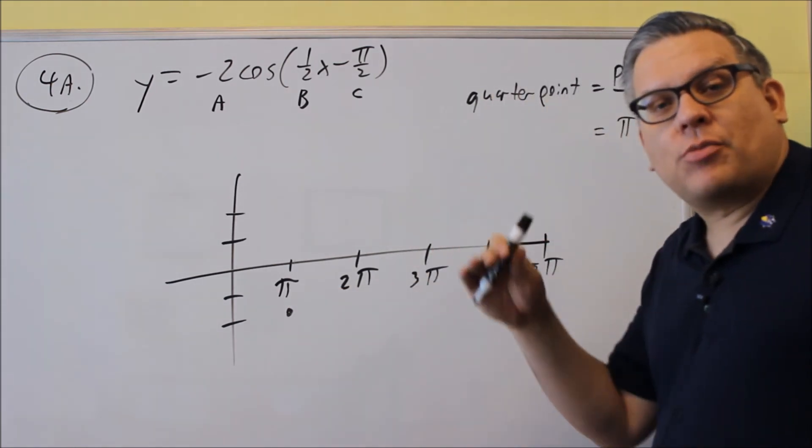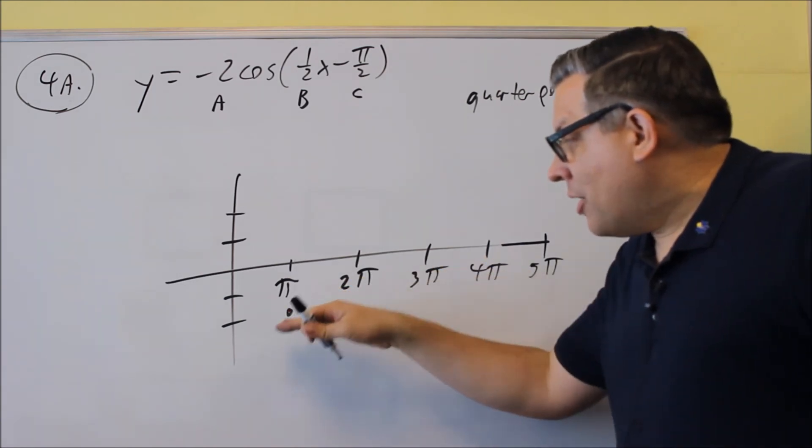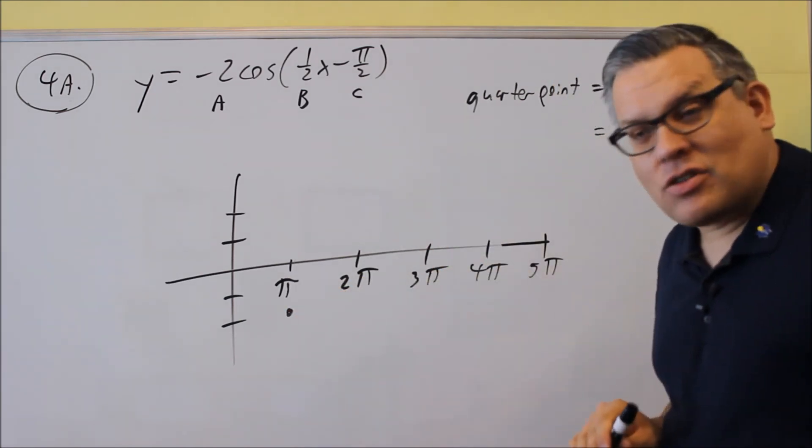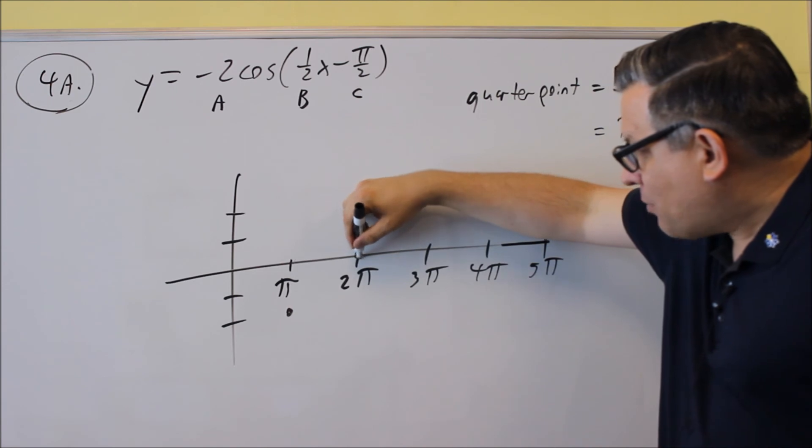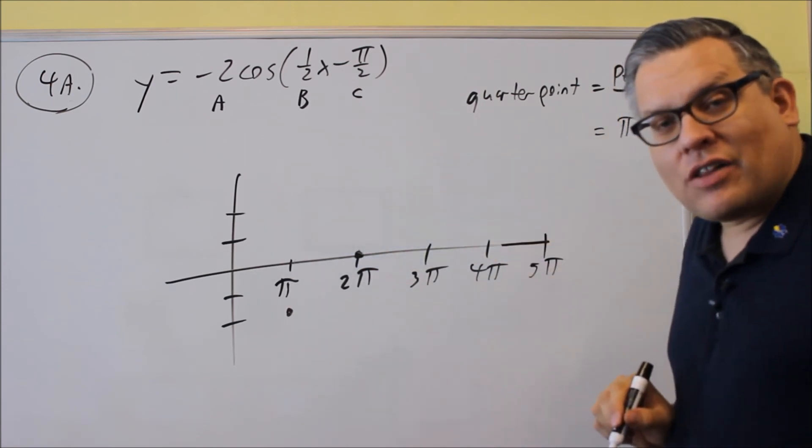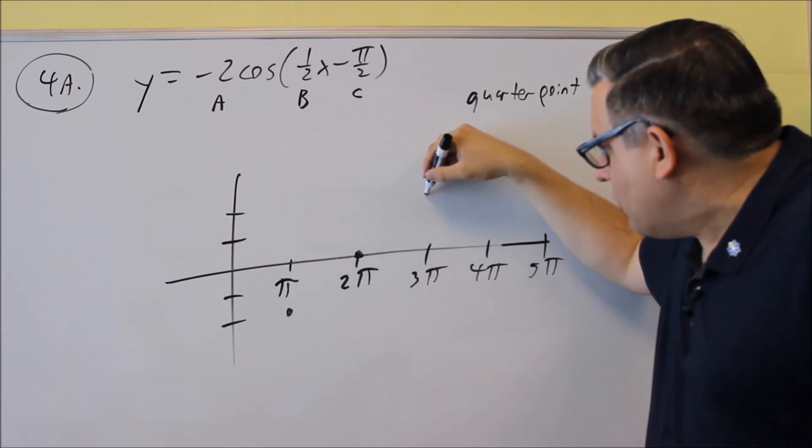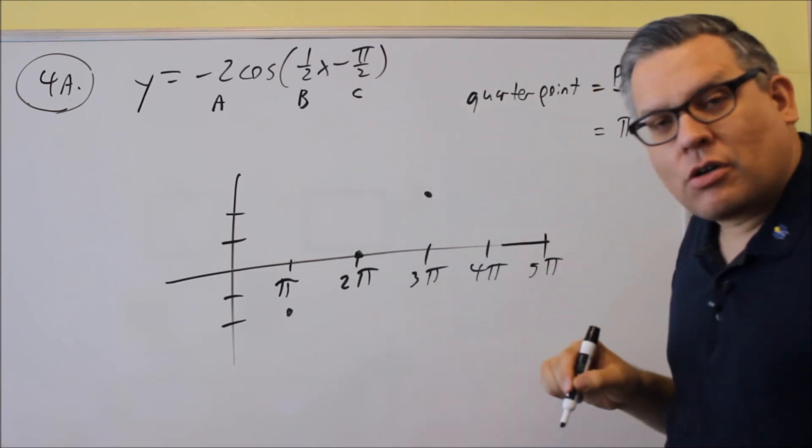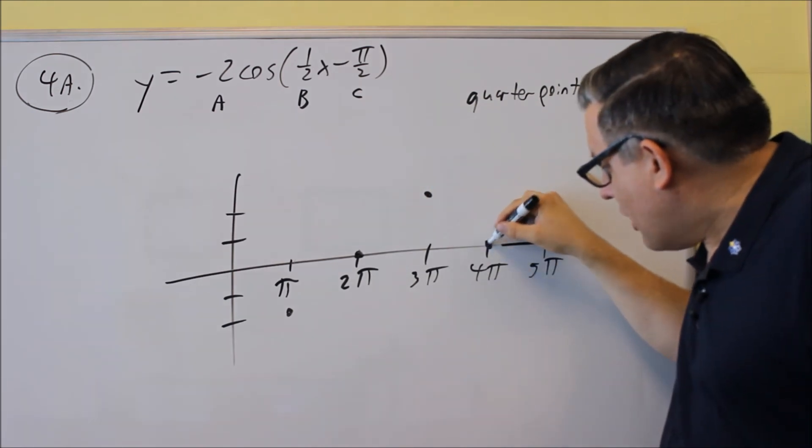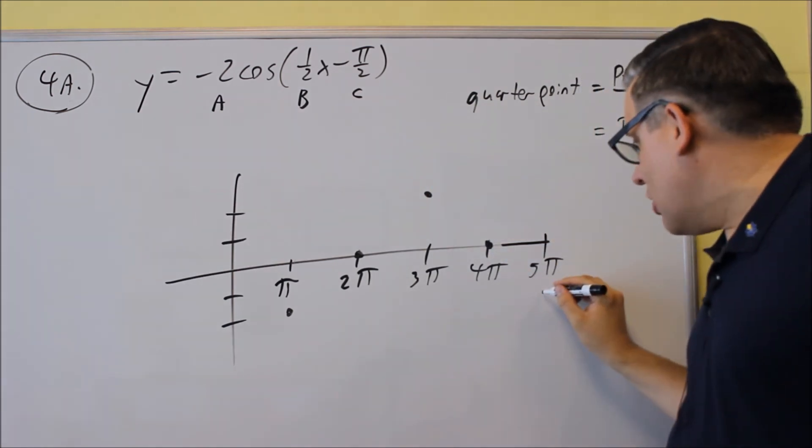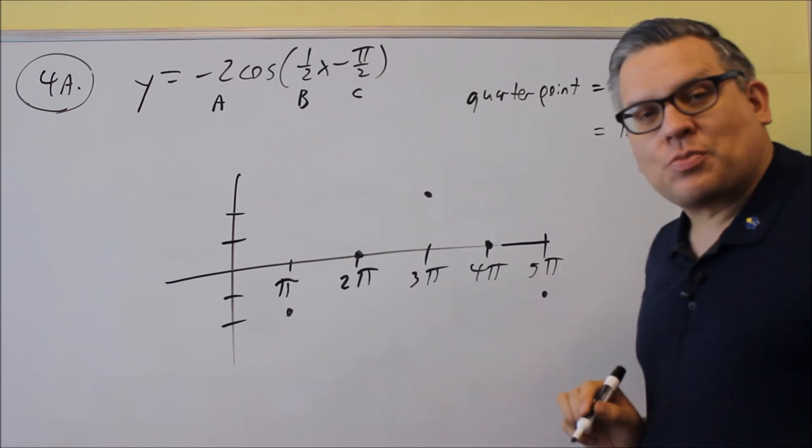Now, the way the graph works, it's going to alternate between the amplitude and the x-axis. So the very next point, the key point here, it's going to cross there at the x-axis. Then it's going to go up to the amplitude here. It'll come back down to the x-axis. Then it's going to finish down here at this point.